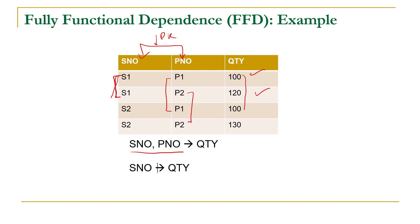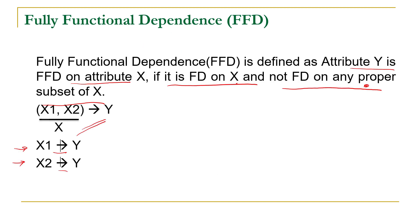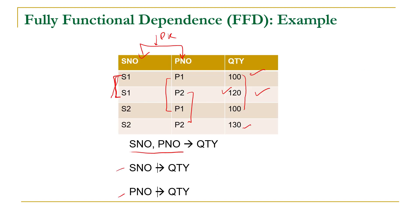Similarly, if you consider P2, there are two different values of quantity for P2, so quantity is also not functional dependent on P number. Quantity is functional dependent on the combination but not on any subset, satisfying the definition of fully functional dependence. Here Y is quantity, which is functional dependent on the combination of S number and P number, but not on any subset. So quantity is fully functional dependent on the combination of S number and P number.